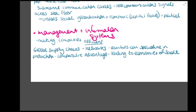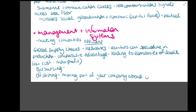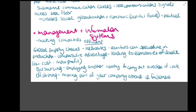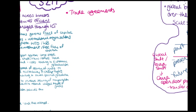Specialising in certain production creates comparative advantage, leading to economies of scale, low cost, and maximum profit. Offshoring is when you move your company abroad - factories moved to areas with cheaper labour. Outsourcing is employing another company to carry out a section of your work, such as call centres. Make sure you know the difference between outsourcing and offshoring as they often get mixed up.